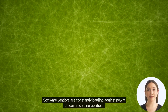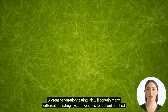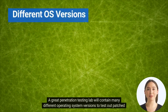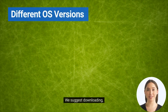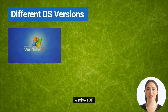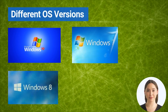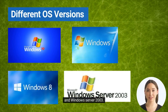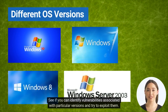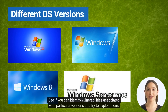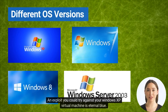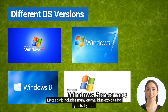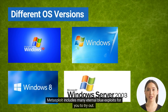Software vendors are constantly battling against newly discovered vulnerabilities. A great penetration testing lab will contain many different operating system versions to test out patched and unpatched exploitation methods. We suggest downloading Windows XP, Windows 7, Windows 8, and Windows Server 2003. See if you can identify vulnerabilities associated with particular versions and try to exploit them. An exploit you could try against your Windows XP virtual machine is EternalBlue — Metasploit includes many EternalBlue exploits for you to try out.